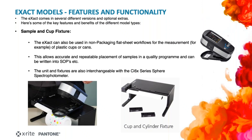One of the newer options with the exact family is an available sample and cup fixture — an instrument stand which allows the accurate positioning of pretty much any sample you would want. This is typically used for plastic cups or metal cans, for example. It allows you to very accurately and repeatably place samples which may be printed in the round, or which were traditionally very difficult to get anything other than a visual assessment on. This unit can then be written into specific operating procedures if necessary. It is also interchangeable with our sphere spectrophotometer, the CI6X range, so it can be used across multiple platforms.